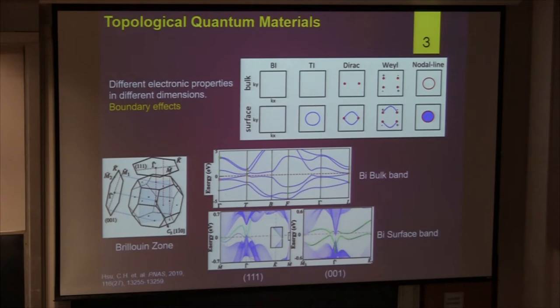For the (1,1,0,1) surface, there are also extra states — that's the surface state. This surface state has a beautiful crossing. So for the bulk it's gapped, but for the two-dimensional surface state we have a beautiful crossing protected by symmetry. They have different properties. That's the topological material.